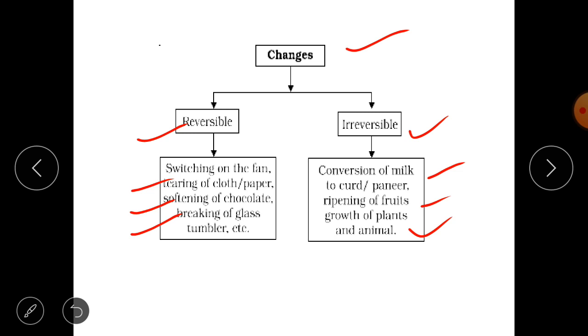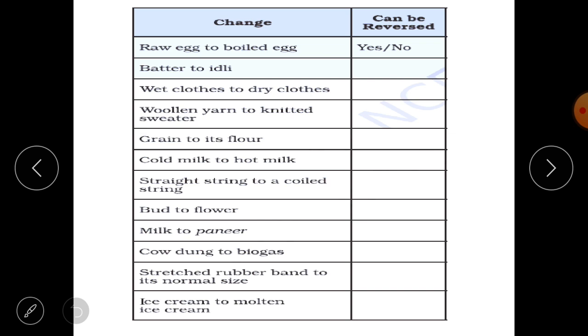So we have seen many examples. Now this is a task for you. You are able to see many changes which has been listed in this table. You have to tell whether they can be reversed or they cannot be.